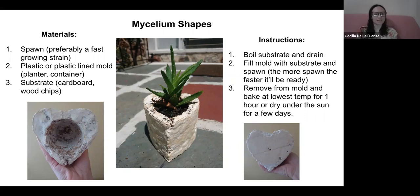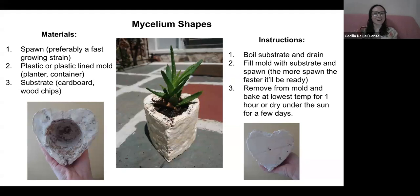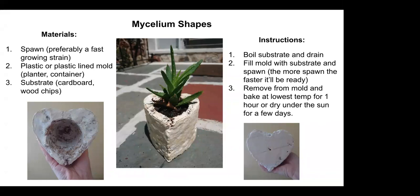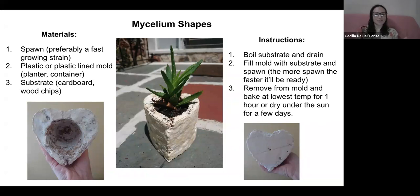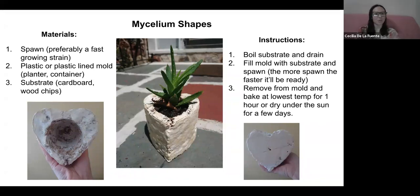We decided to share some recipes. The first is mycelium shapes. Rather than thinking about the cultivation of mushrooms for food, we're thinking about cultivating mycelium to turn it into an object. I made a planter with mycelium. One of my favorite mushrooms is lion's mane, but lion's mane mycelium is very thin, very wispy, and it grows very slowly, so it wasn't the most appropriate strain to use.